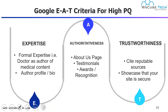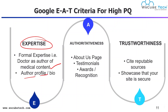Next we have the EAT criteria for high page quality ranking. E stands for Expertise — formal expertise, such as a doctor as author of medical content. If you're writing a blog related to medical topics and your author box mentions you are a doctor, your audience considers you an expert in that field, so they can trust your website. This can improve your page quality. Your author profile and bio help a lot with this type of page quality.